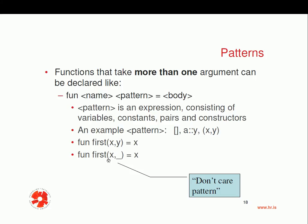We could also write fun first of x comma underscore — this is called the don't care pattern, because the second variable is not used in the body of the function. Instead of giving it a name, we use the underscore as the don't care pattern.